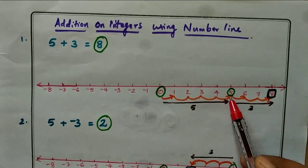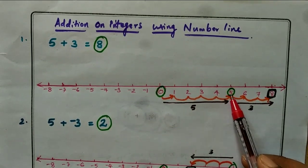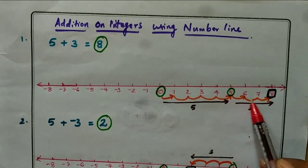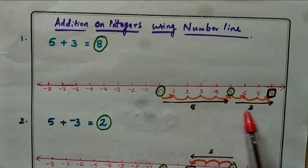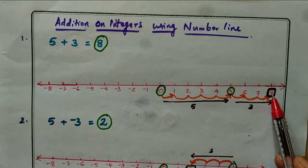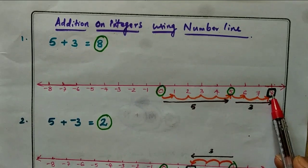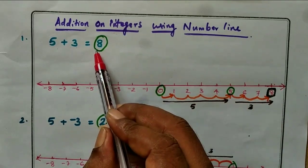Start from 0, move right to 5. Then add 3: move right 1, 2, 3. So 5 plus 3 equals 8. The answer is 8.